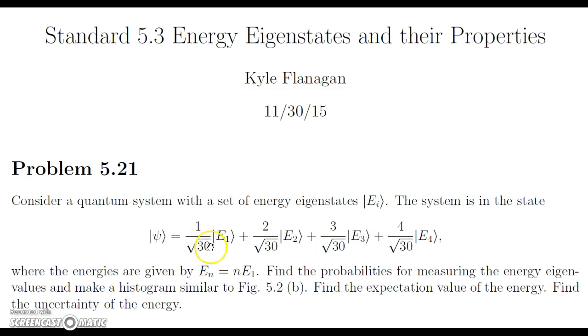So here we just have a sum of n over root 30 times En. And here we have the energies that are given by E sub n is equal to n times the first energy eigenstate, the ground state.